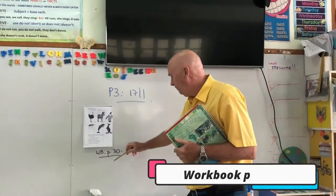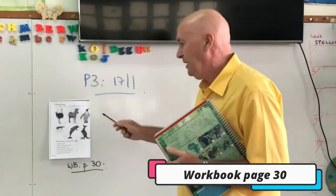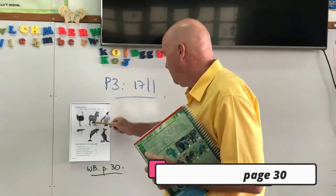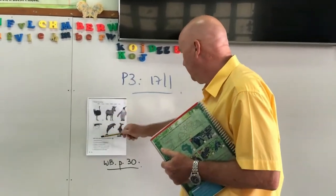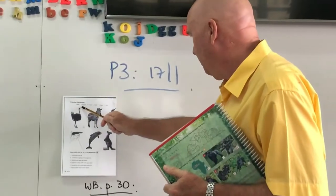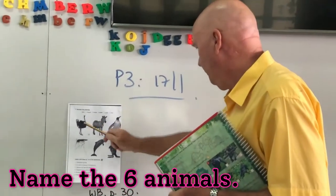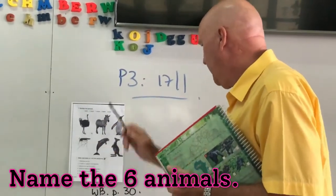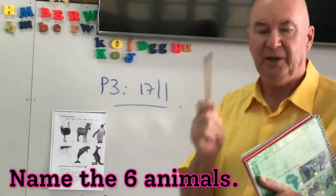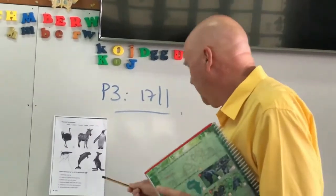We're on workbook page 30. The first thing we've got is six animals — just put the name of the animal next to the picture. That one's okay.